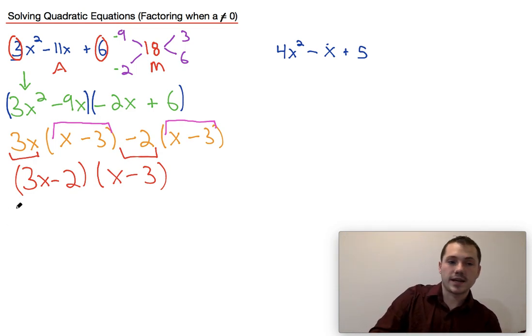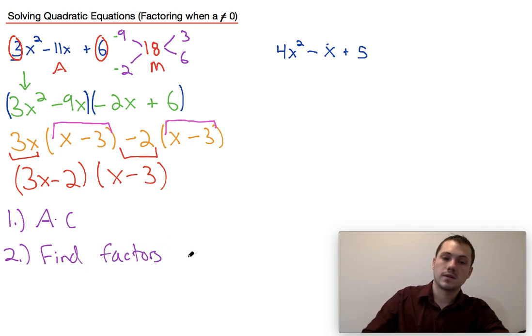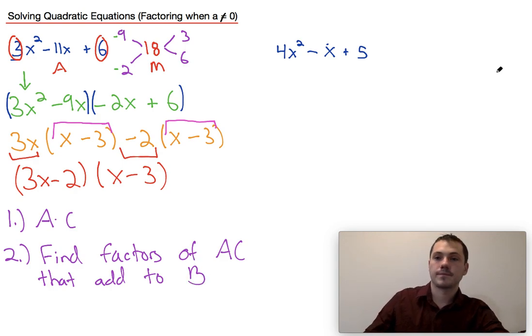So just to reiterate, step 1 was we found the product of a times c. Step 2, find factors of AC that add to B.